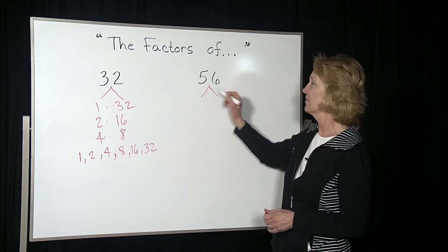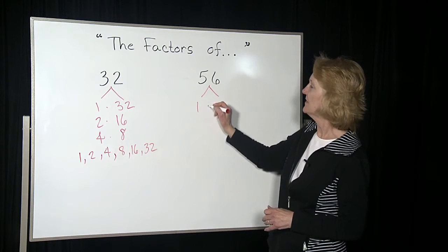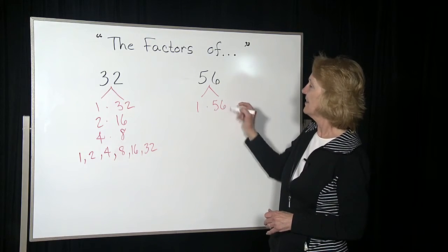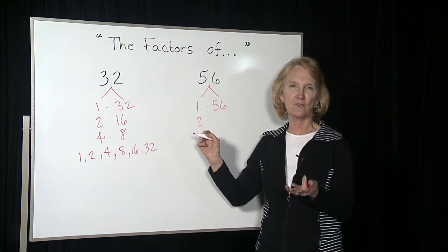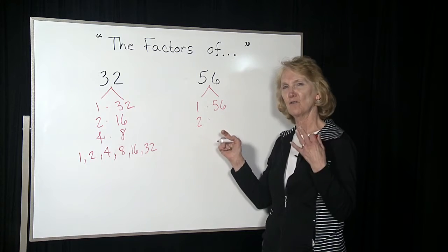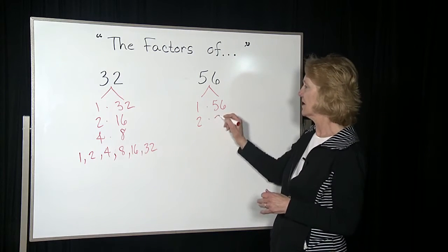We branch it out. That's obviously 1 times 56, and then that's even, so I know I can take a 2 out. 2 times, I cut 50 in half, and I get 25. Cut 6 in half, I get 3, so 25 plus 3, so it's got to be 28.